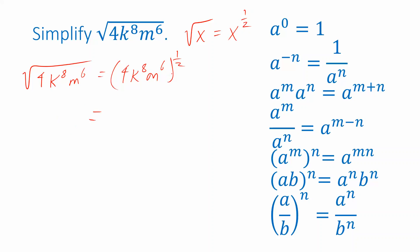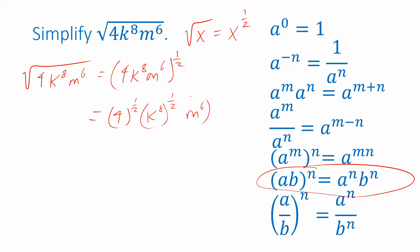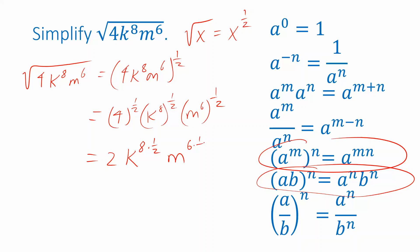Now we've got a quantity inside parentheses multiplied together, raised to a power, so we use the power of a product rule again with three factors: 4 raised to the one-half, times k to the eighth raised to the one-half, times m to the sixth raised to the one-half. Then 4 to the one-half is the square root of 4, which is 2. K to the eighth to the one-half uses the power of a power property: k to the eight times one-half. Similarly, the last factor is m to the six times one-half. Simplifying those exponents: eight times one-half is four, six times one-half is three. So this expression simplifies to 2k to the fourth m to the third.